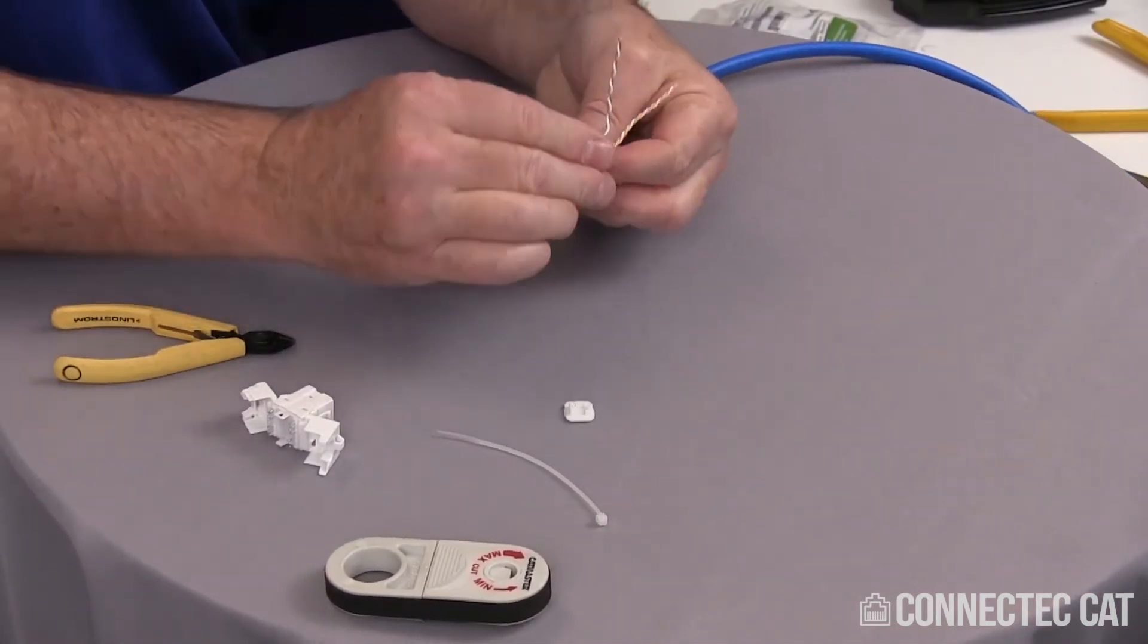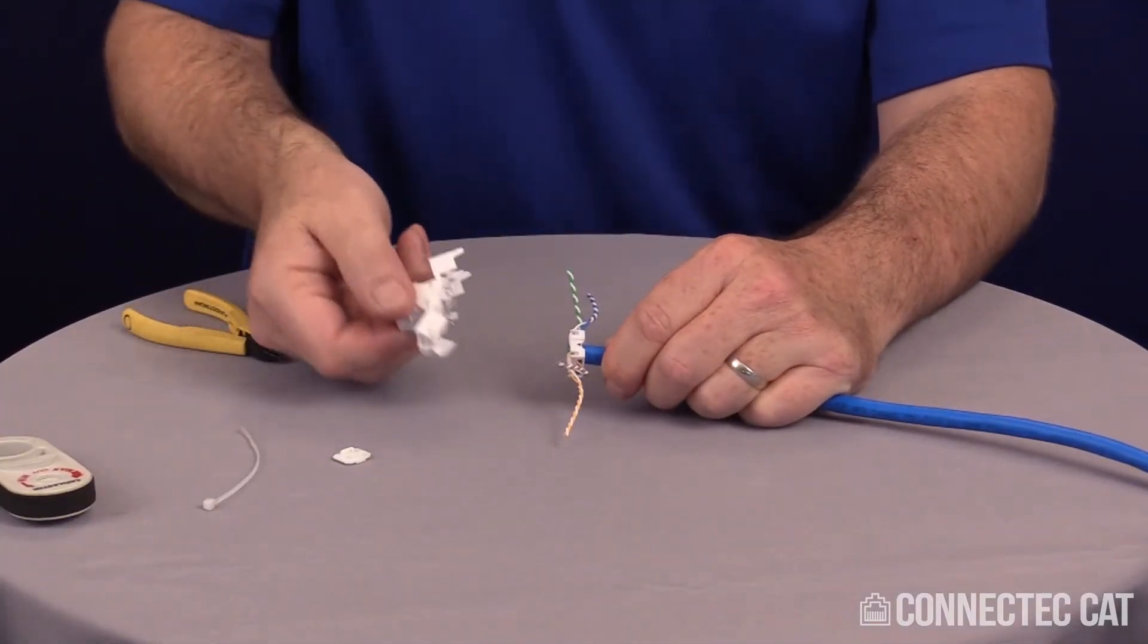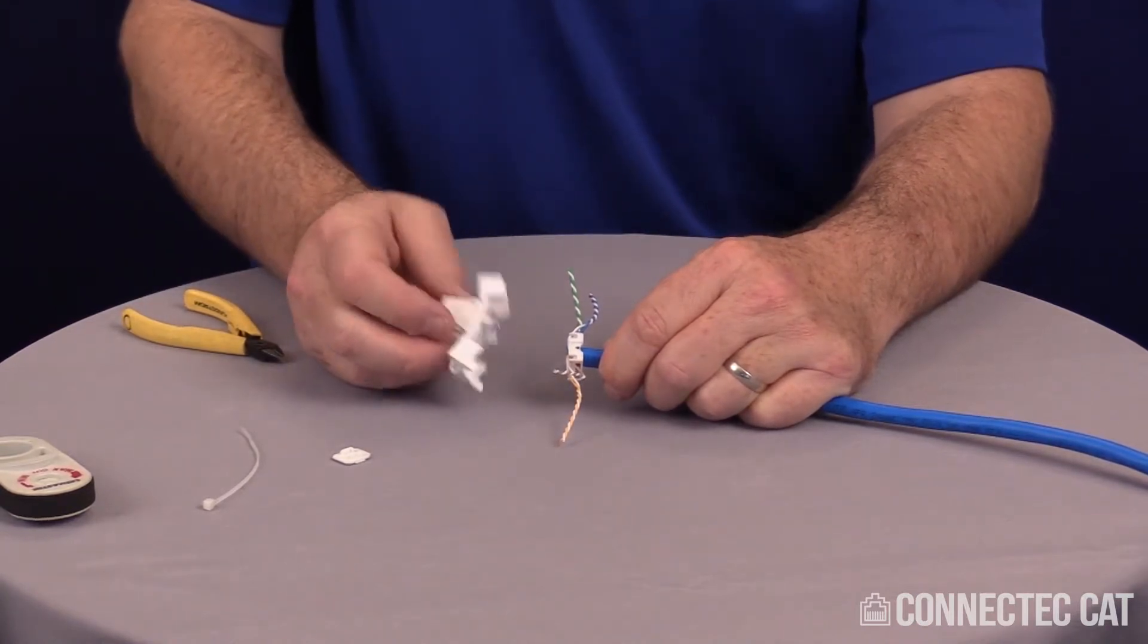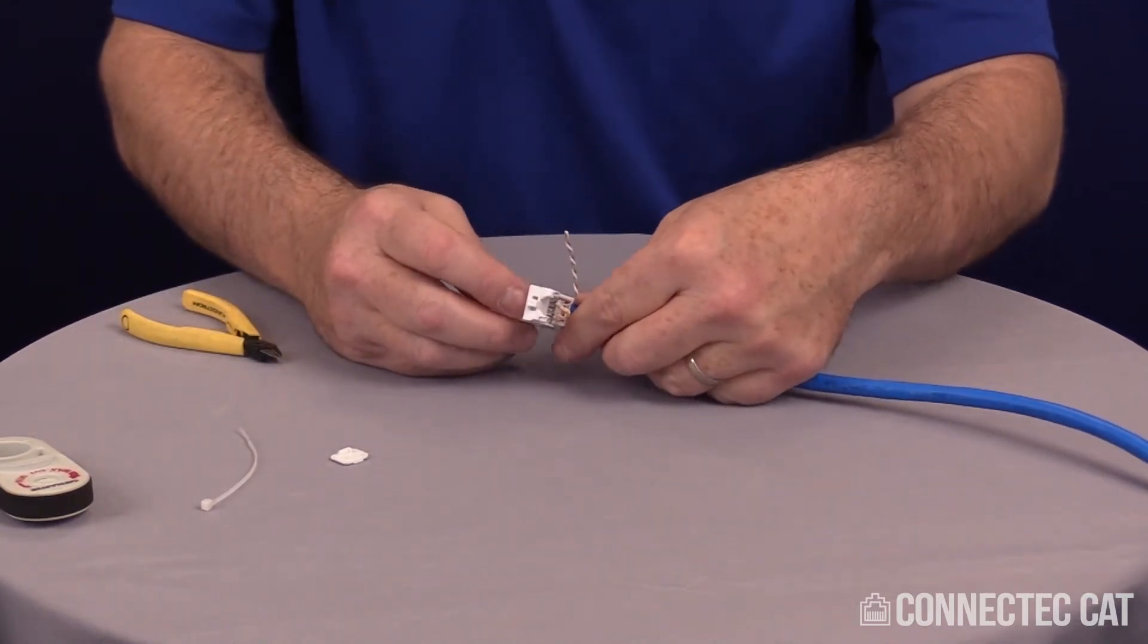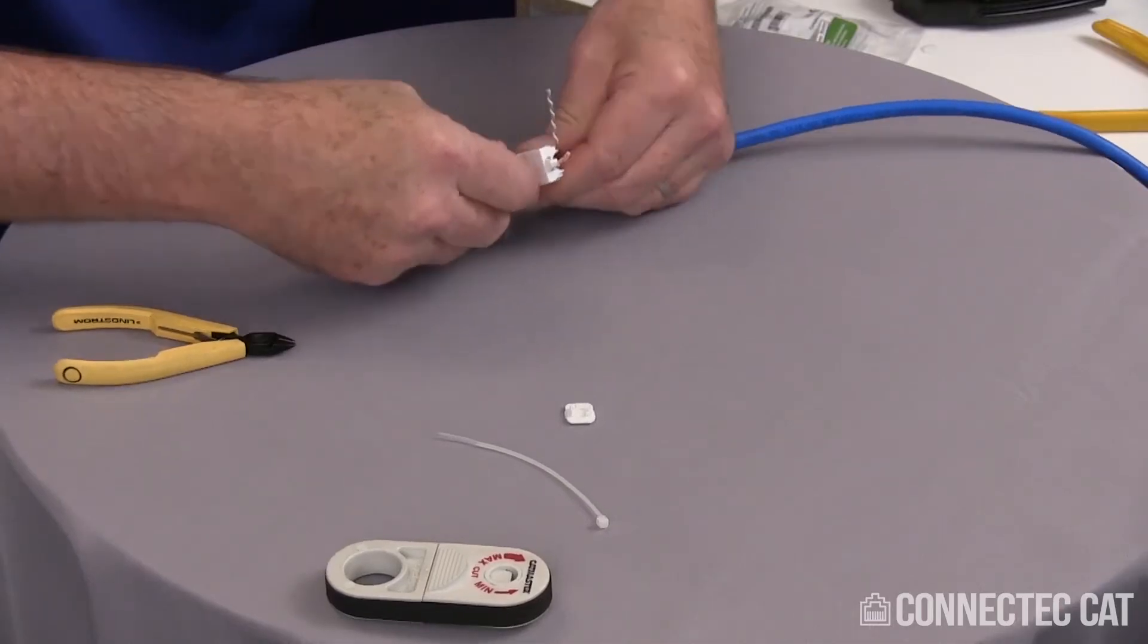There's a black arrow here and there's a black arrow here. You want to make sure those two line up. There's no black arrow on this side, so make sure you don't cross the wires. I'm going to line those black arrows up and give it a nice firm push just to start it.